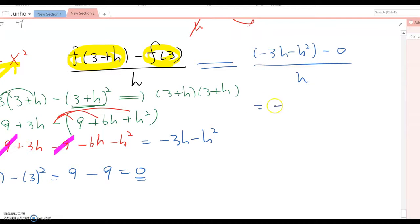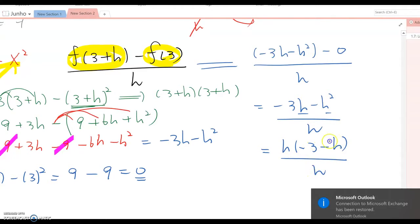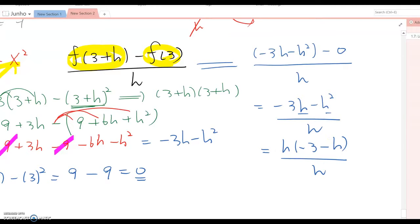It becomes negative 3h minus h squared over h. If you factor by h, because two terms both have h here, then h(negative 3 minus h) over h. You cancel h and h here. The answer becomes negative 3 minus h.